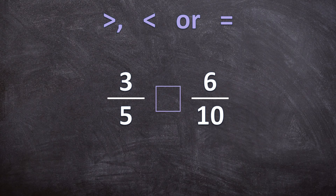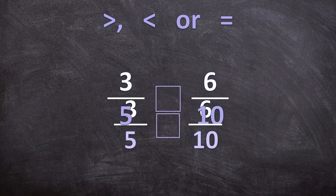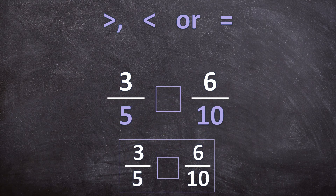Now what if neither the numerators nor the denominators are the same? Here we have different numerators and different denominators. How will we determine which fraction is bigger and which one is smaller? We are going to change one or both of the fractions so that our denominators are the same. But before I do that, I'm just going to write down the original fractions so that we can come back to that later.